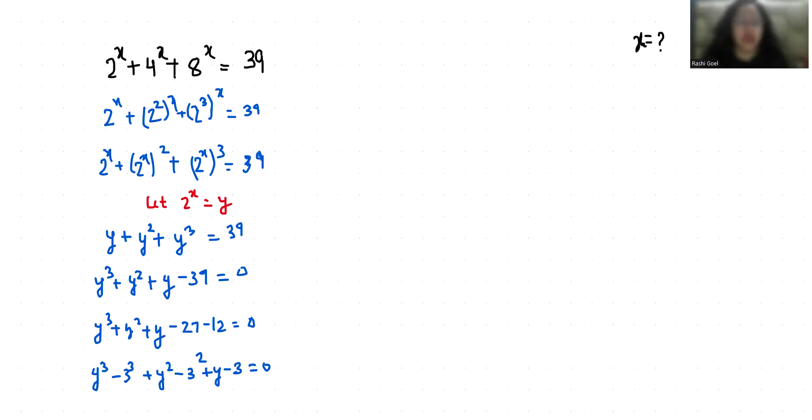Now y³ - 3³ as a³ - b³, that is (a - b)(a² + ab + b²), times here, times here a² - b².